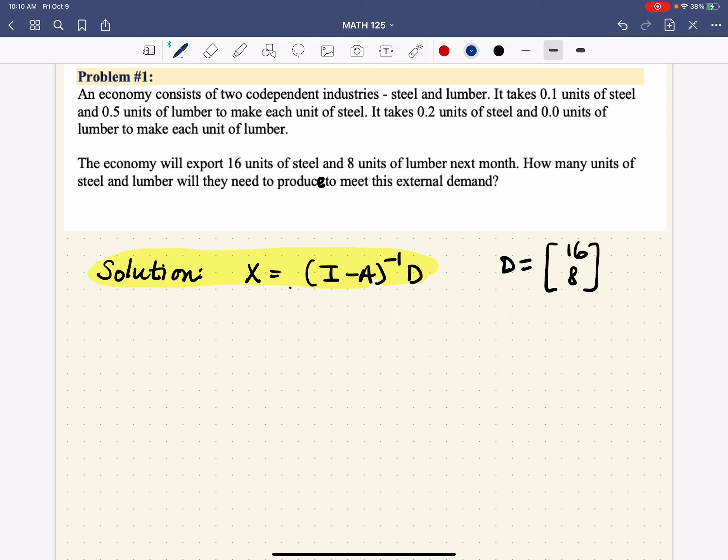So remember how this all works. We need to come up with a matrix A. Your book calls it a production matrix. I like to call it a consumption matrix, or it's sometimes called a technology matrix. It's basically the matrix that controls how much of the technology is required to use, to produce.